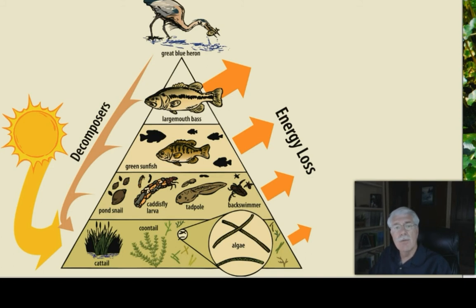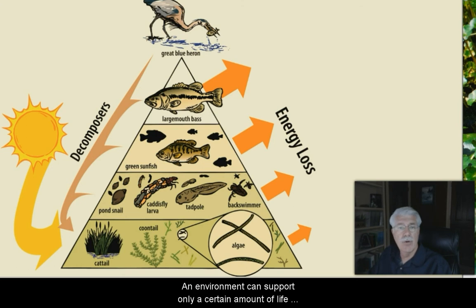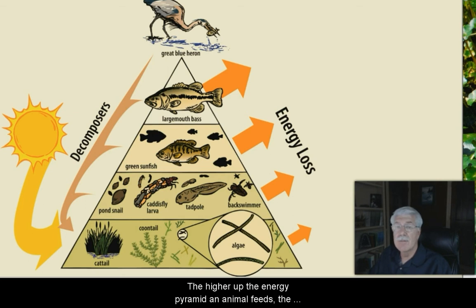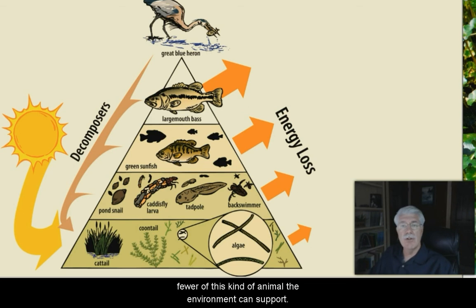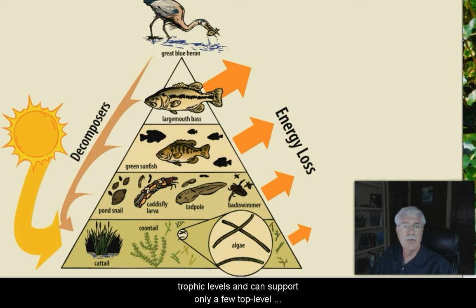An environment can support a certain amount of life at each step in the energy pyramid. The higher up the energy pyramid an animal feeds, the fewer of this kind of animal the environment can support. Most energy pyramids can continue for only about four or five trophic levels, and they can support only a few top-level consumers.